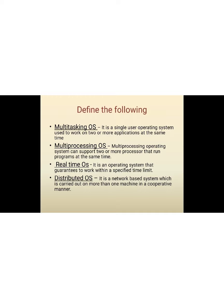Third, real-time operating system. It is an operating system that guarantees to work within a specified time limit. Last we have distributed operating system. Distributed operating system is a network based system which is carried out on more than one machine in a cooperative manner.